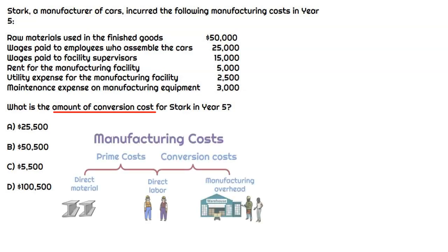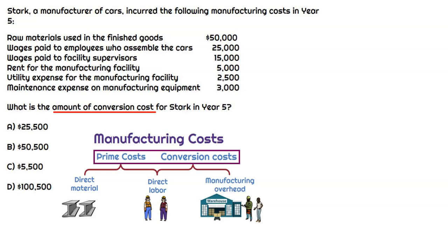When we think about manufacturing costs, the next layer they can be classified at is either prime cost or conversion cost. Conversion cost consists of direct labor and manufacturing overhead. So as long as it's not a direct material, it's going to be considered a conversion cost if it's incurred in the manufacturing process.